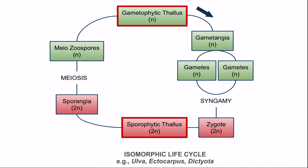In this type of life cycle, gametophytic thallus has gametangia; gametangia have gametes; gametes fuse to form a zygote. The diploid zygote forms another thallus, which is the sporophytic or diploid thallus. In the sporophytic thallus, diploid sporangia are present. In the sporangia, meiosis occurs and the zoospores formed after meiosis are haploid; these are known as meozoospores. Meozoospores germinate to form the haploid or gametophytic thallus.